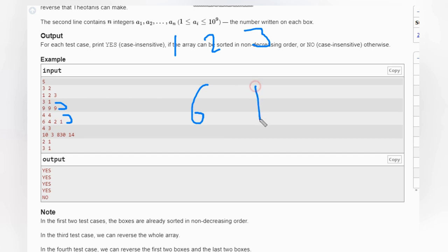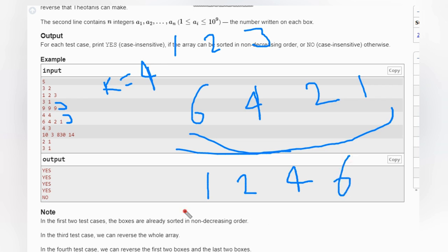So we have 6, 4, 2, 1. We need to reverse this - it's in reverse order and we have k equal to 4. That means we can consider a subarray of length 4, and this is the subarray which has length 4. We can directly reverse it to get 1, 2, 4, and 6. This is sorted, so we can sort it.